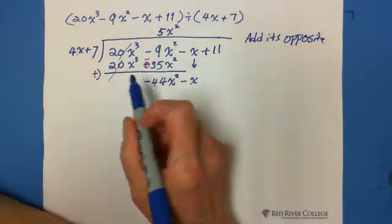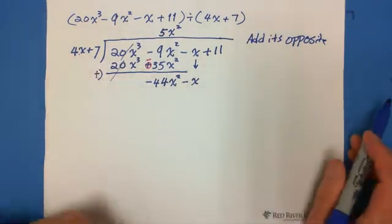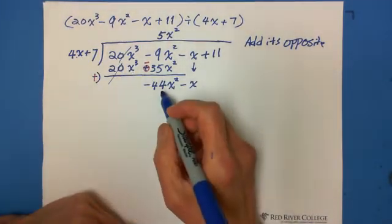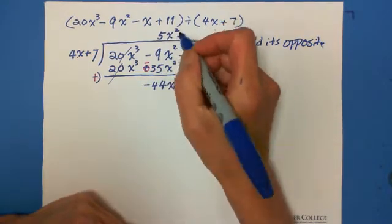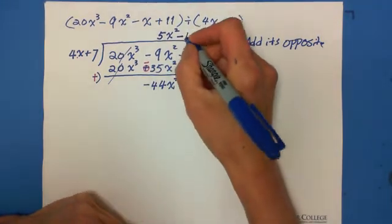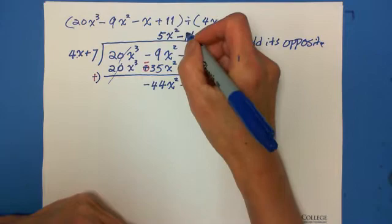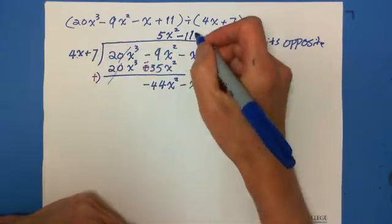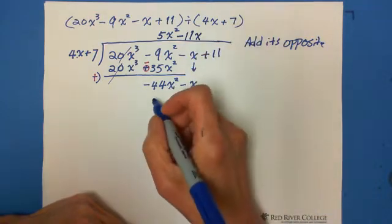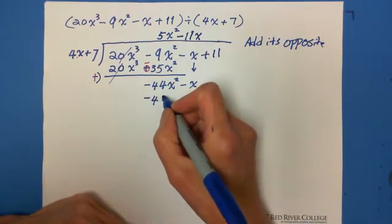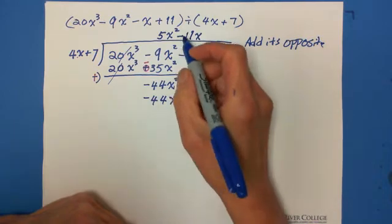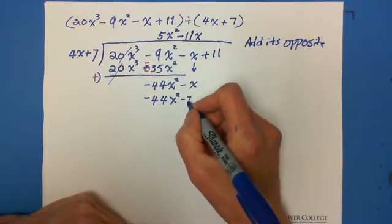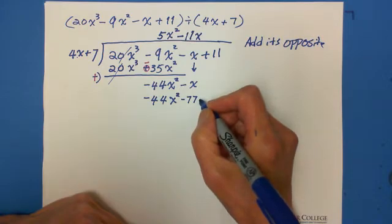And these two terms, divide this one, and see which number, multiply by 4, you got the 44, and also negative. So you have negative 11. Because 11 times 4, you got 44. And this is x, this is x squared, so 11x. So we've got negative 44x squared. And negative 11x multiplied by 7 is negative 77x.